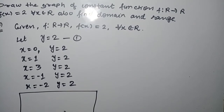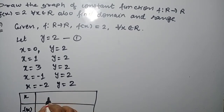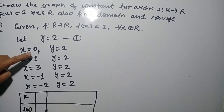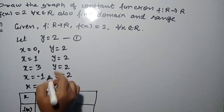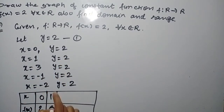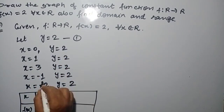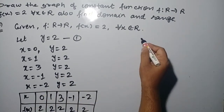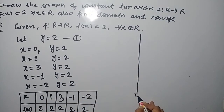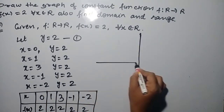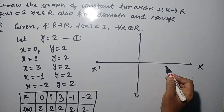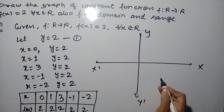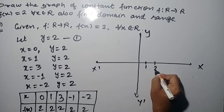So students, we can tabulate the values of input and output. Input is x and output is y: (0, 2), (1, 2), (3, 2), (-1, 2), (-2, 2). Now let us plot these things on the graph with a vertical x-axis and horizontal y-axis.